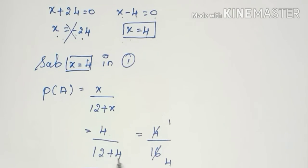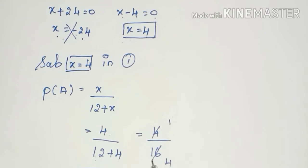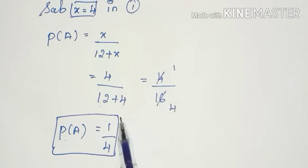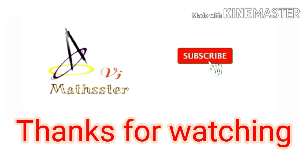Substituting x = 4: P(A) = 4 divided by (12 + 4) = 4/16 = 1/4. Thanks for watching, friends. Please subscribe to the channel and share this video with friends.